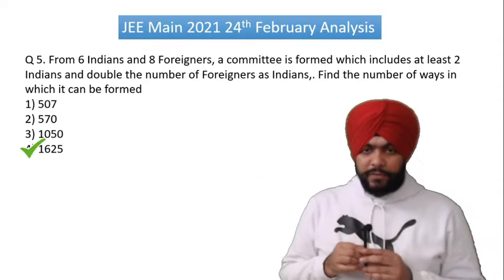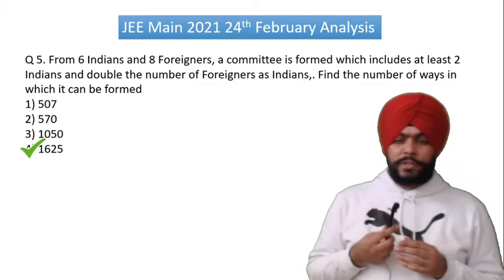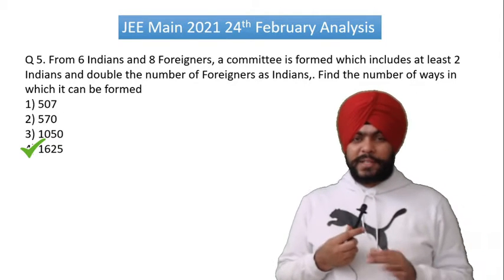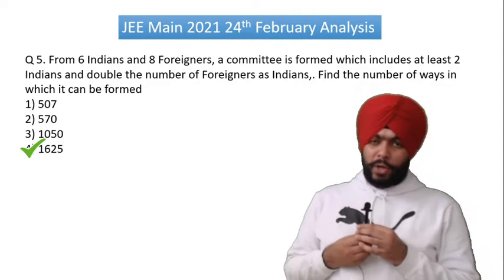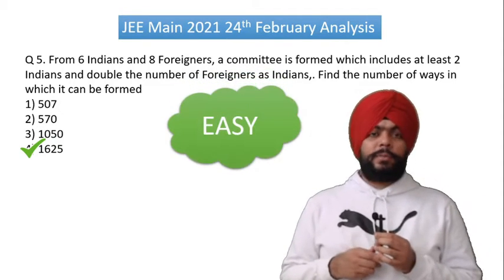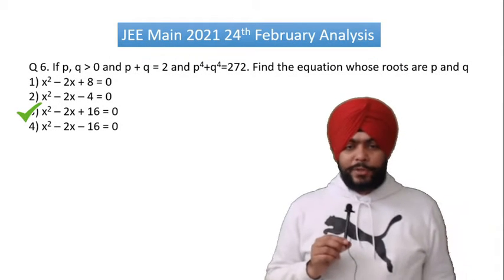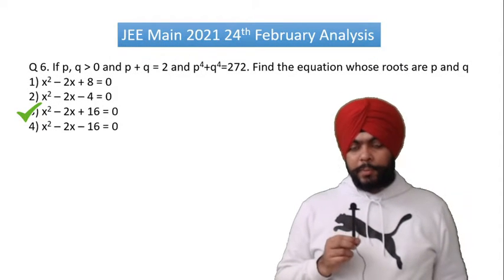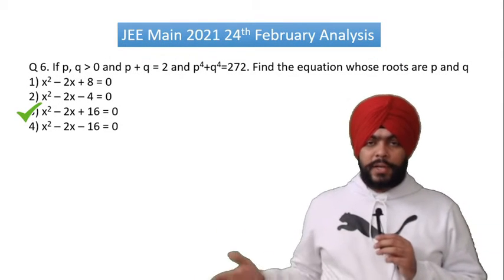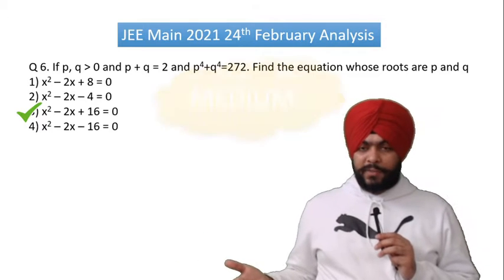Question number 5 is a standard question that almost 90% of kids have seen, so it is very easy — NCRT level. Question number 6 is quadratic-based, but it is a degree 4 question and the calculation is much more involved. So it is medium level.